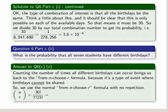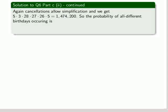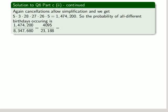Okay, so n equals 30, r equals 7. This time we get 30 factorial over 7 factorial over 23 factorial. And we expand that out, cancel 23 factorial from the numerator. And these simplifications allow us to write 5 times 3 times 28 times 27 times 26 times 5. And we get 1,474,200. So the probability of all different birthdays occurring is that number over the 8 plus something million, or the 8 million plus something million. So we get, we can simplify there, and we get 0.177 to be the probability. Okay, that they're all on different days.